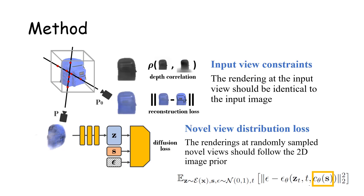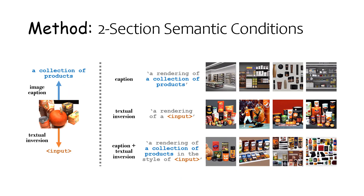We represent the underlying 3D scene as a NeRF and optimize for its parameters with three losses: a reconstruction loss at the fixed input view, a diffusion loss at arbitrarily sampled views which takes a conditioning text input generated from the input image with our two-section feature extraction, and finally a depth correlation loss at the input view to regularize the 3D geometry. We introduce a text-based conditioning input as guidance that narrows down the generic prior over natural images to a prior of images related to the input image.